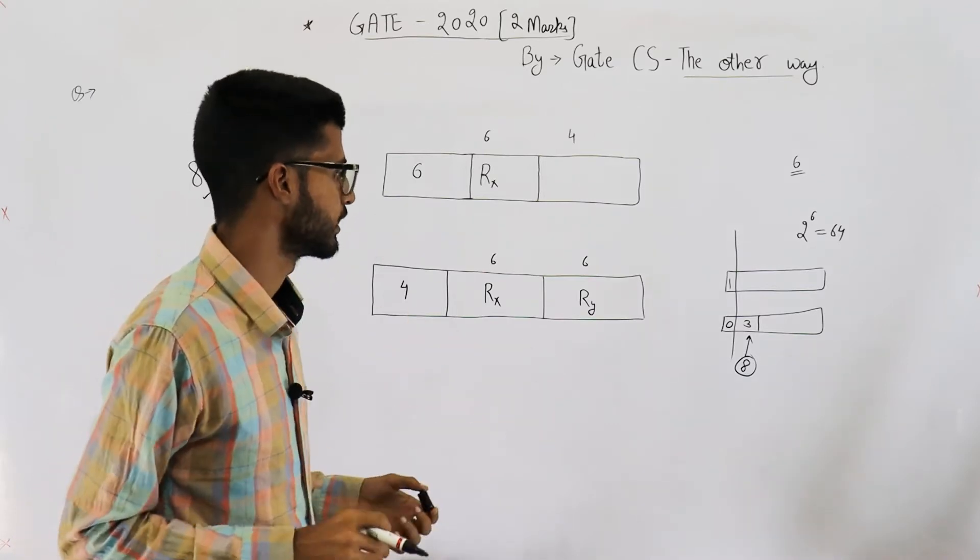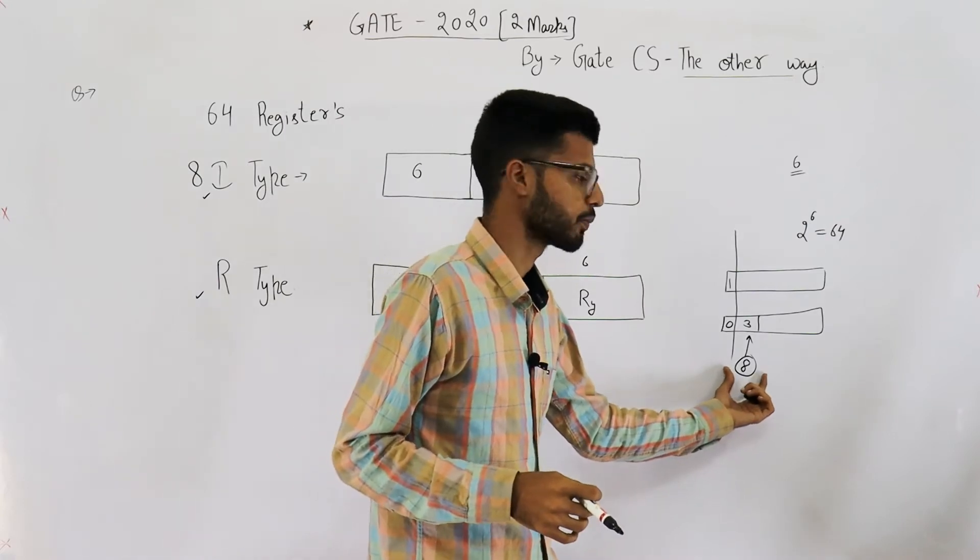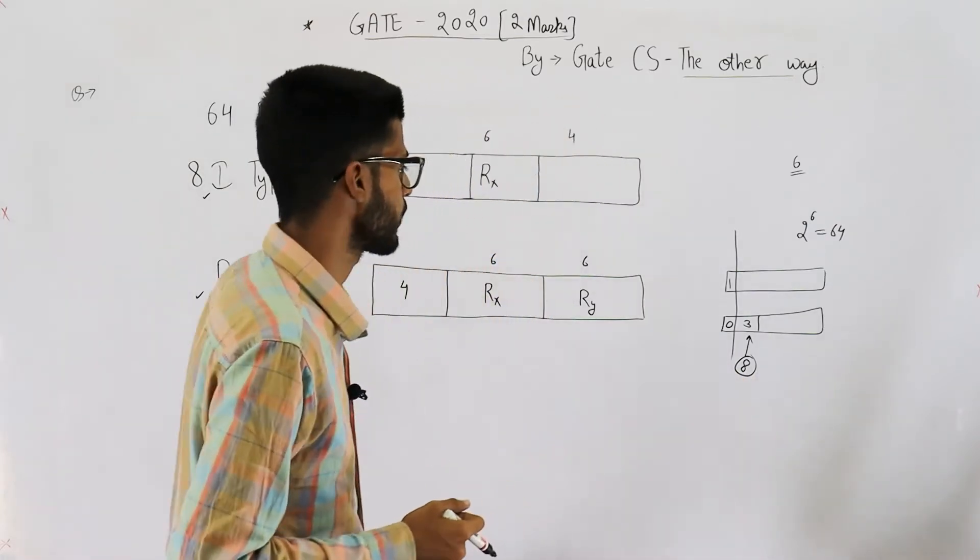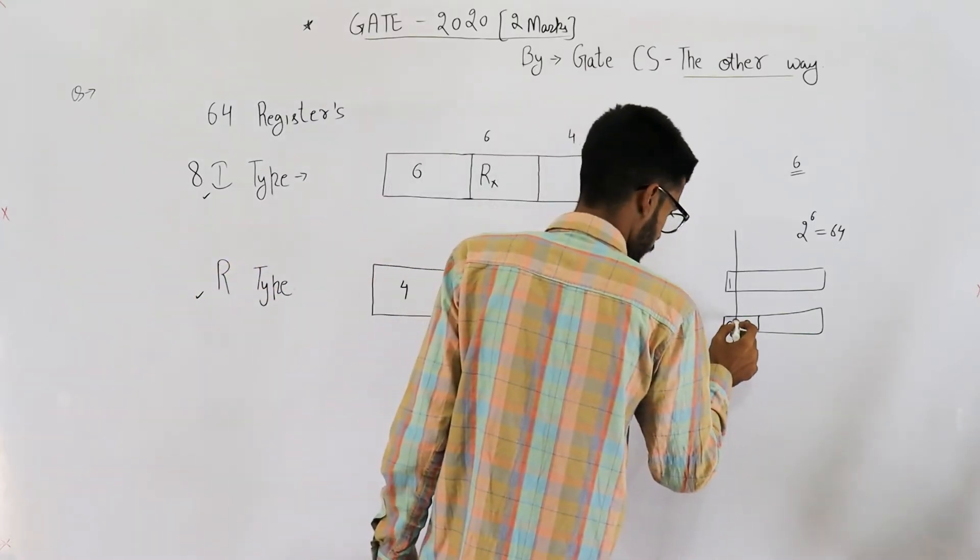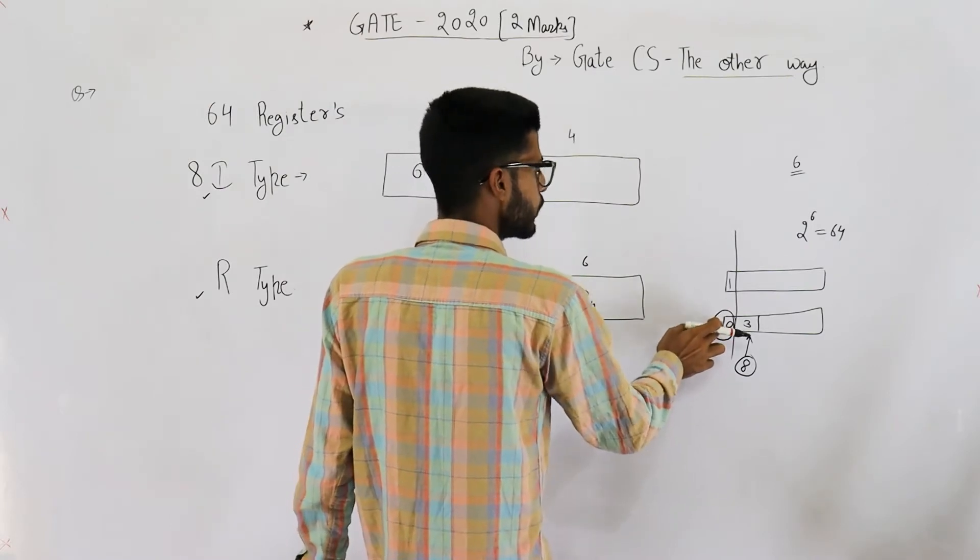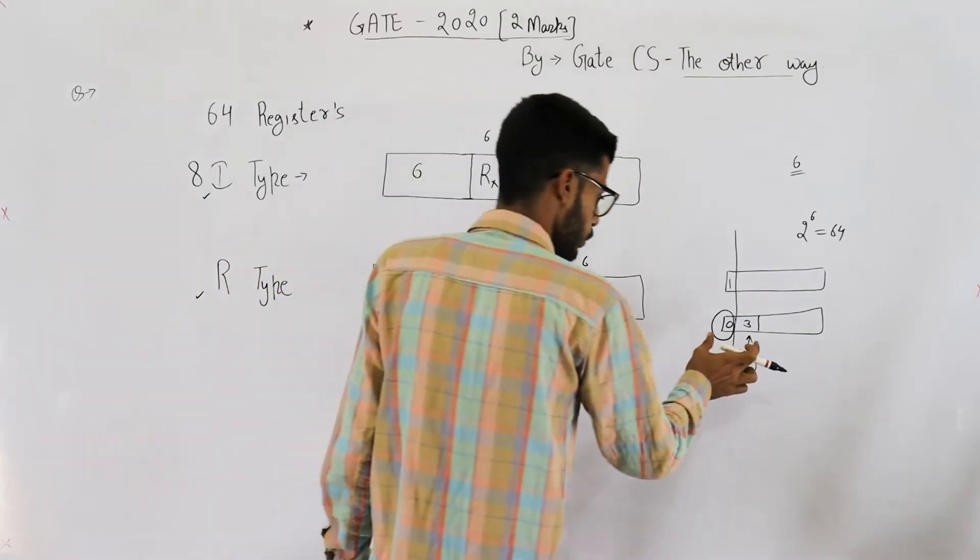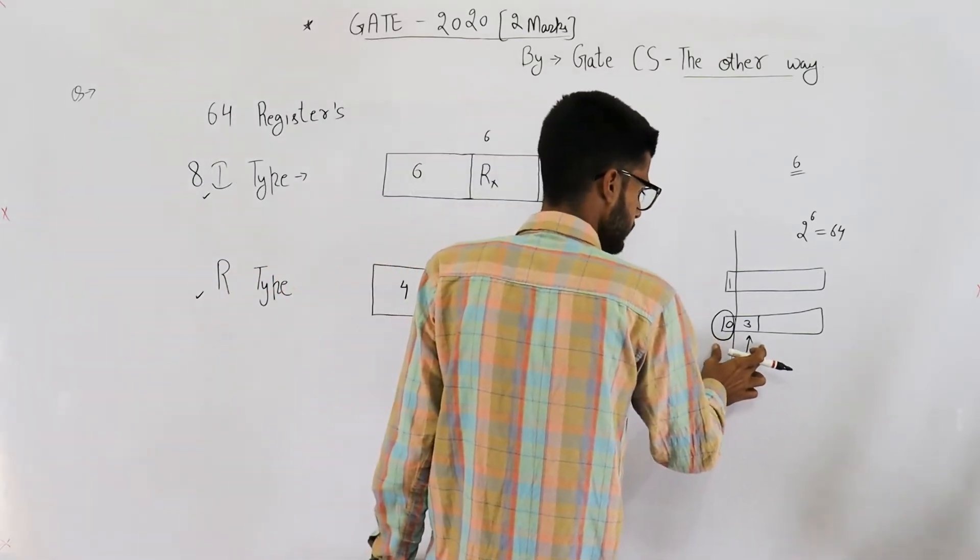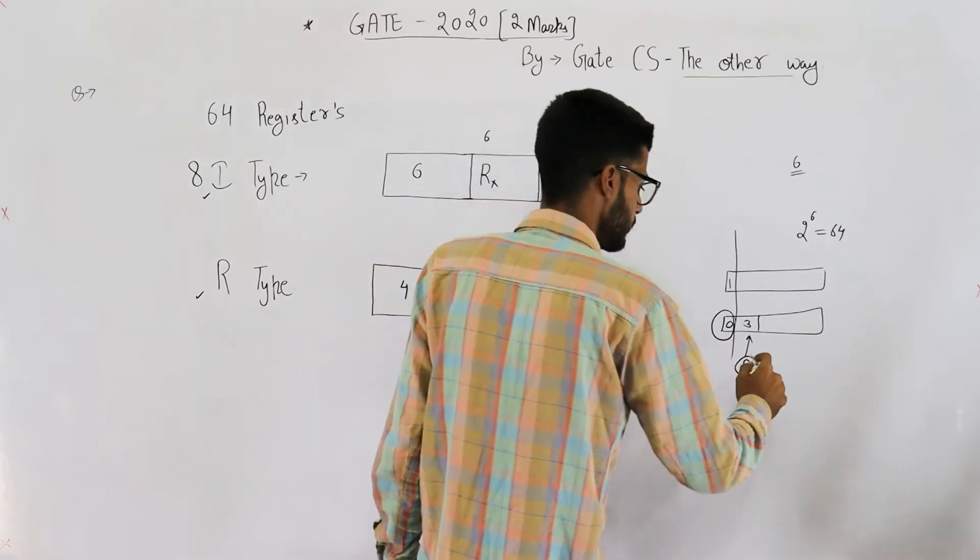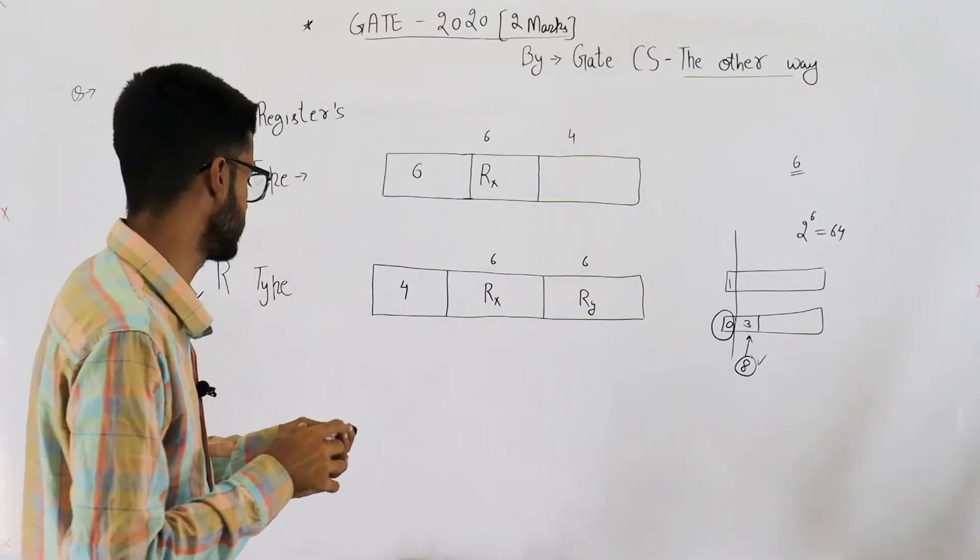We can do one more thing or we can have one more solution where R type opcodes or R type instructions supported can be more than eight. Instead of fixing this bit, what I'm trying to say is you don't fix this bit, include this bit also in opcode. And then you have four bits for specifying the opcode. That means possibly more than eight R type opcodes could be supported. Let's see that solution.